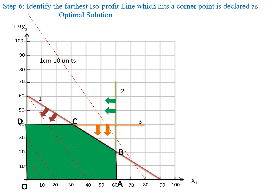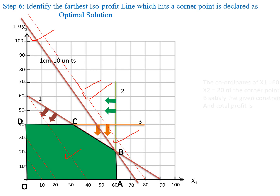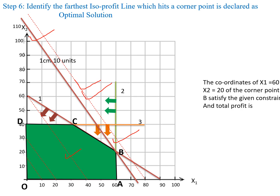The next step is to identify the farthest isoprofit line which hits a corner point of the feasible region. We draw additional parallel lines and observe which one hits the farthest corner point. This line hits the farthest corner point in the feasible region, and the coordinates of this corner point are the optimal solution. The coordinates of this point are x1 = 60 and x2 = 20.